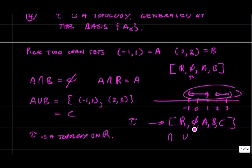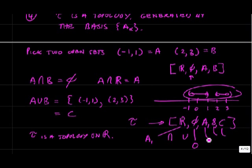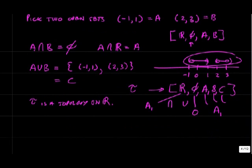This is a somewhat minimal topology with five distinct open sets. The cardinality of the real numbers is uncountable infinity, sometimes called Aleph 1. The cardinality of the empty set is zero. The cardinality of sets A, B, and C is also uncountable infinity — open intervals on the real number line have the same cardinality as the entire real numbers.